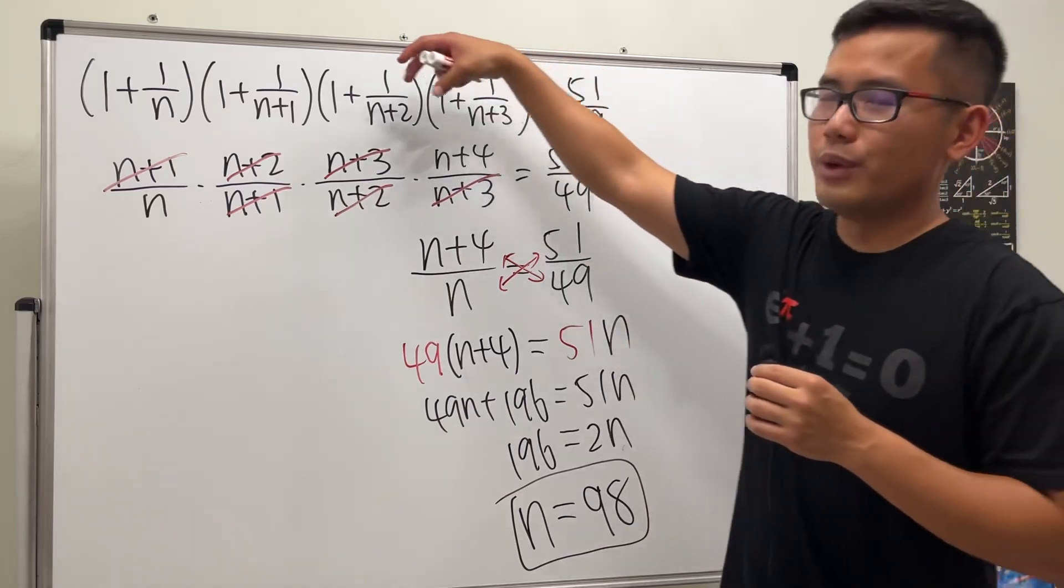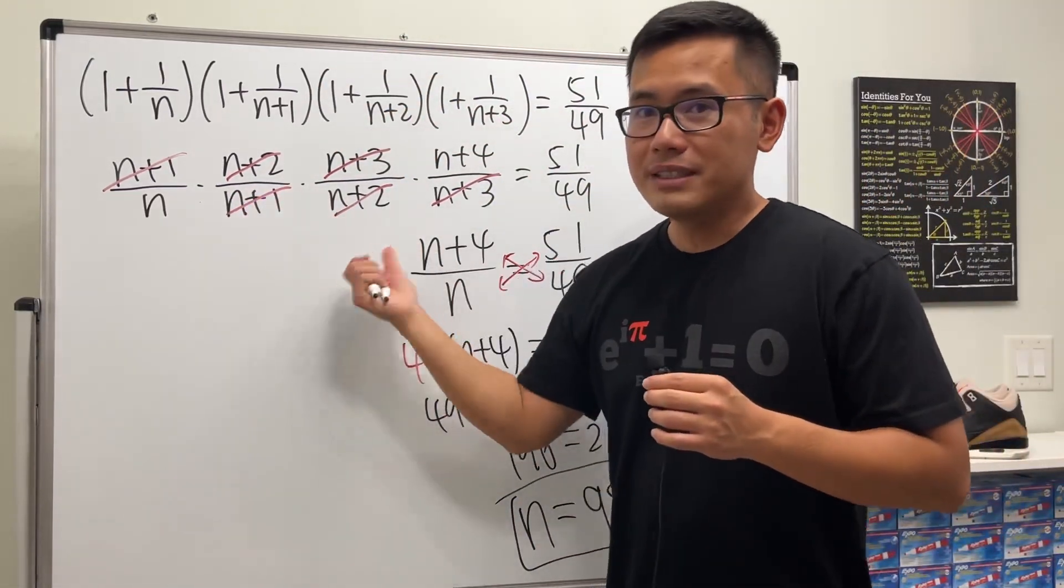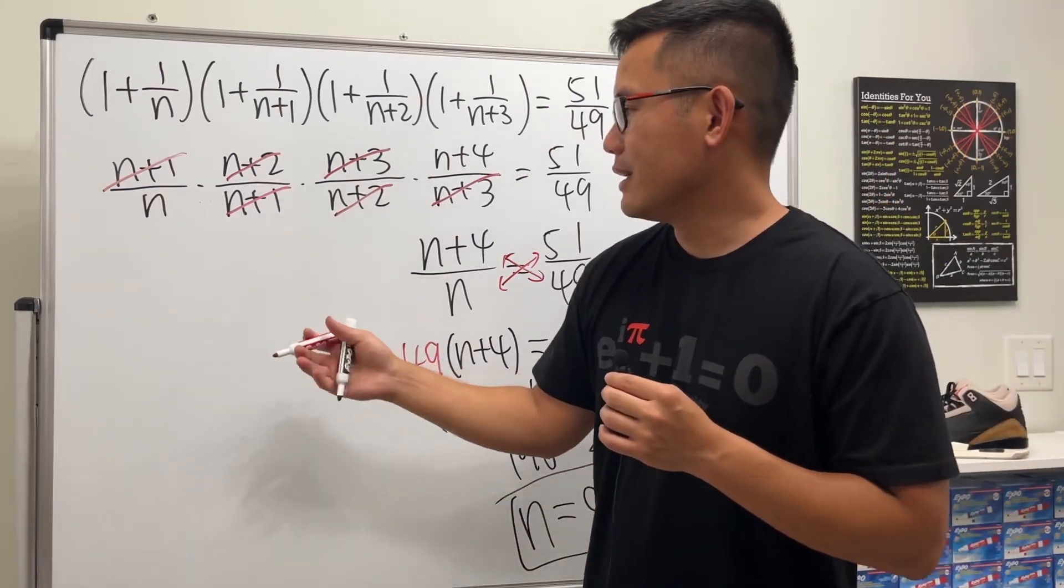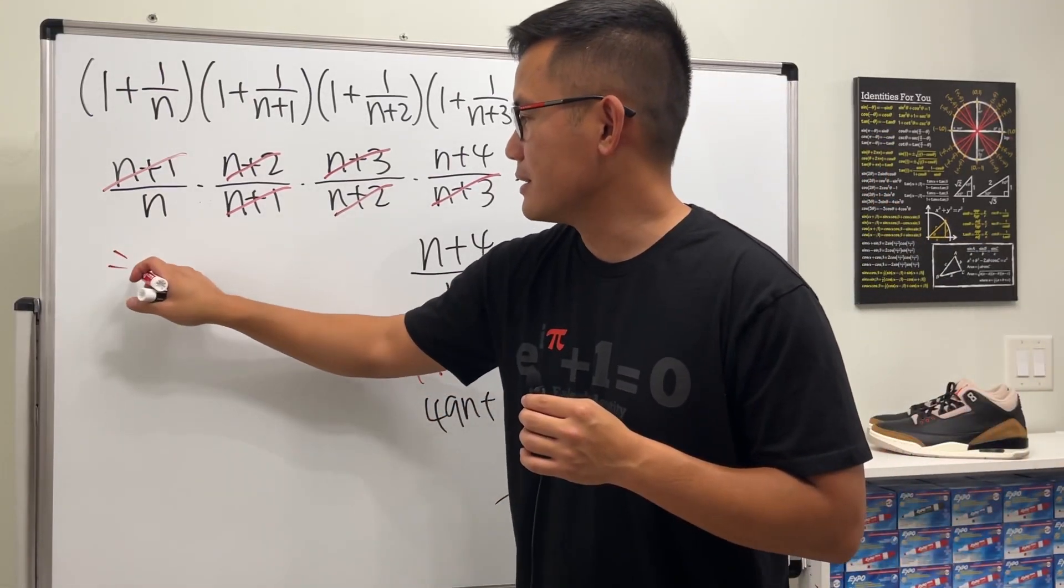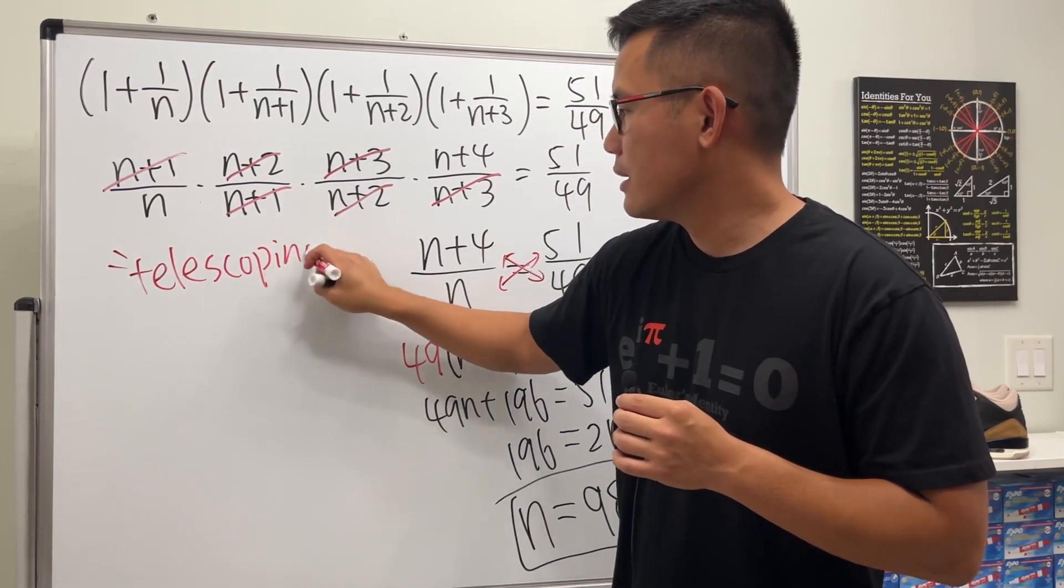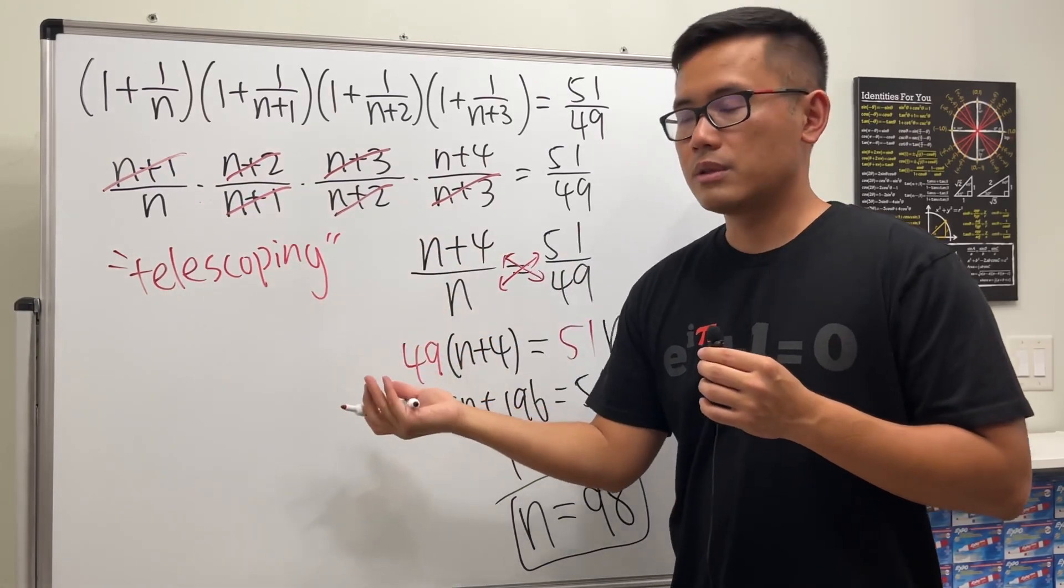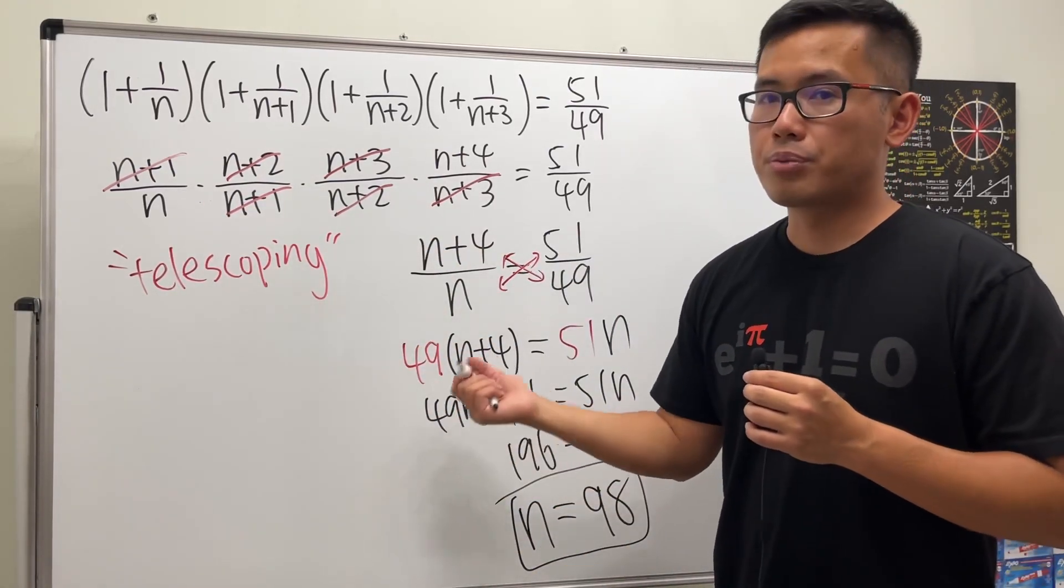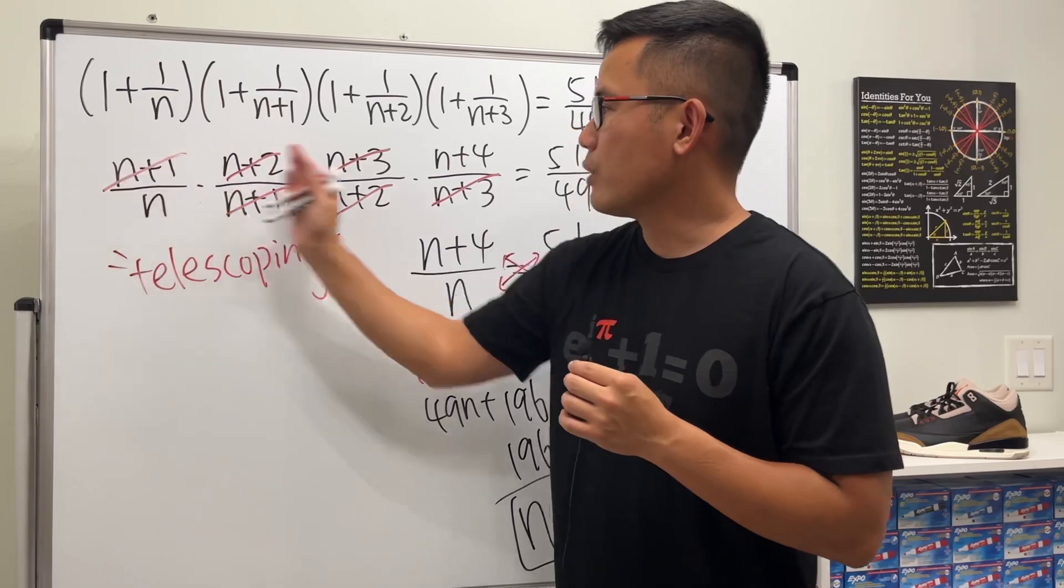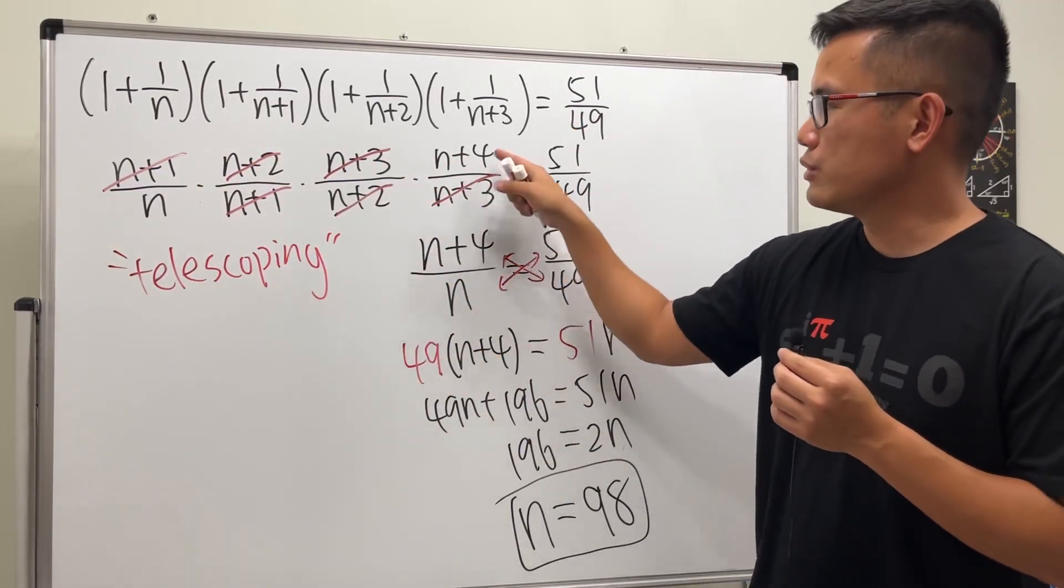Very clean. Of course, you can have more and more of these kinds of terms. Whenever this kind of thing happens, this is called a telescoping situation. This is not a sum, this is a product, so you can call this a telescoping product, because when you multiply a bunch of things, a lot of things in the middle just cancel.